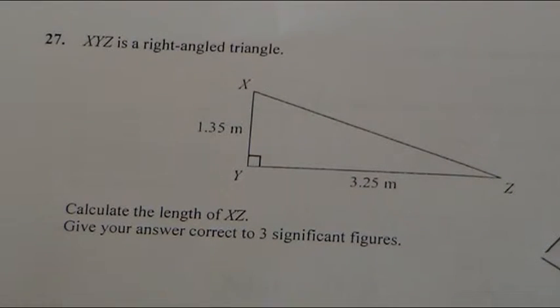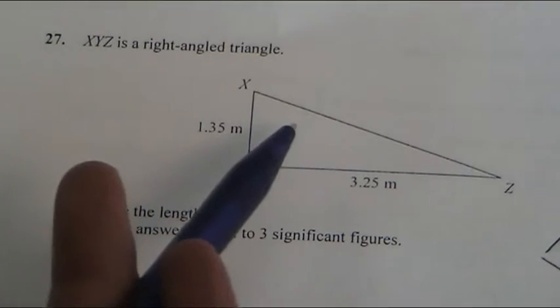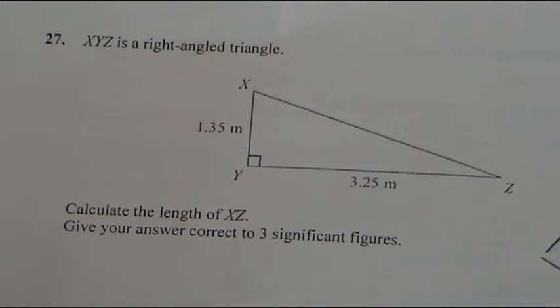Question 27 is a Pythagoras question, and I know that because we have a right-angled triangle. So with triangles, they normally ask you to find area, perimeter, or if it's near the end of the paper, it's more likely going to be Pythagoras.